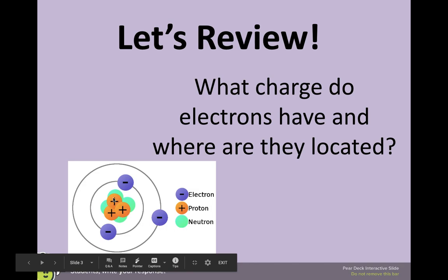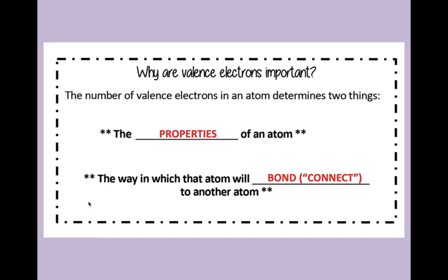Protons and neutrons are located in the nucleus, and electrons are located in the rings that surround it. All the purple ones are your electrons. Today we're going to focus on just your valence electrons. Why are valence electrons important? The number of valence electrons in an atom determines two things. The properties of an atom and the way in which they are going to bond or connect with another atom.